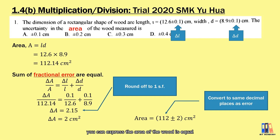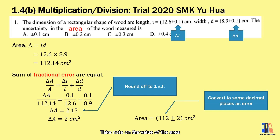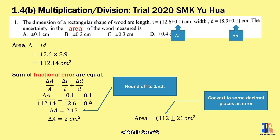So in the end, we can express the area of the wood as 112 ± 2 cm². Note that the value of the area has the same decimal places as the error, which is 2 cm².